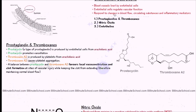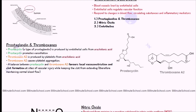The first one is prostaglandins and thromboxanes. Thromboxanes aren't actually produced by the endothelial cells, but we're going to focus on prostaglandins and relate it to thromboxanes. Prostacycline is one of the prostaglandins and it's produced by the endothelial cells from arachidonic acid.